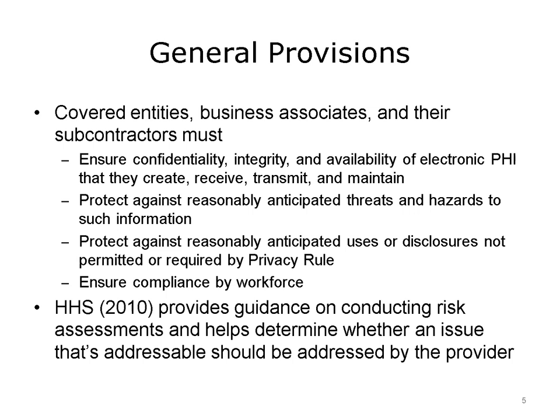The general provisions of the Security Rule are that covered entities, their business associates, and subcontractors must ensure confidentiality, integrity, and availability of electronic protected health information, or PHI, that is created, received, transmitted, and maintained by the entity. Entities must protect against reasonably anticipated threats and hazards to such information by having a secure data center and using encryption where appropriate. They also must protect against reasonably anticipated uses or disclosures not permitted by the Privacy Rule, and must ensure workforce compliance. HHS provides guidance on conducting risk assessments, helping determine whether something addressable should be addressed by the provider. If the provider chooses not to address it, the decision should be documented in the risk analysis.